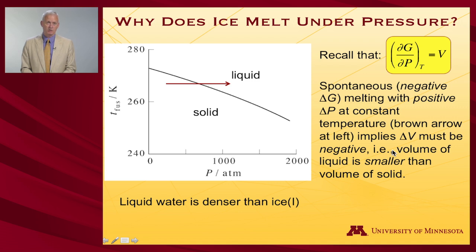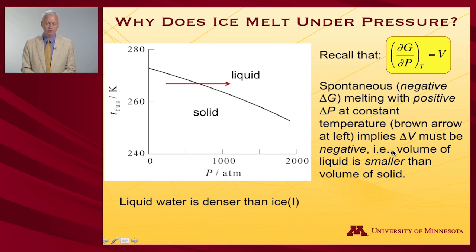Given a smaller volume but the same mass — the same amount of substance — that must mean that liquid water is denser than ice: we've put the same mass into a smaller volume. That's what makes water very unusual. For most substances, that is not true — the solid is more dense than the liquid. But this, of course, is responsible for why ice floats on water.